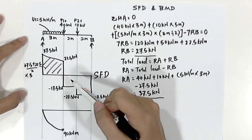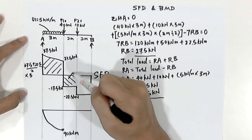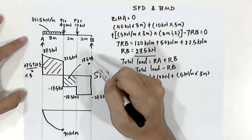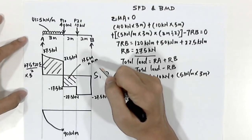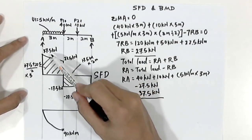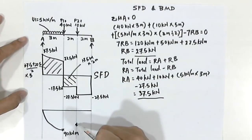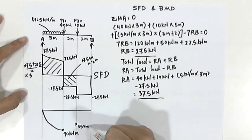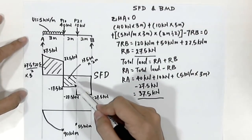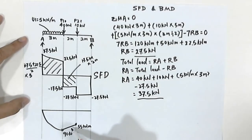Let us go to the next section in our shear force diagram. We calculate this area, which is 17.5 kilonewtons times 2 meters. The total area deducted by the new area will give a value of 55 kilonewton meters. Since it is a straight line in the shear force diagram, we'll draw a linear line in our bending moment diagram.